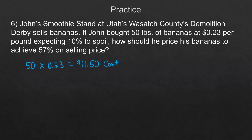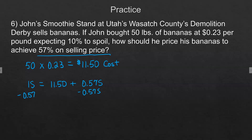We want to mark up based on selling price, but we don't know the selling price — we know the cost. So we set up the equation: $11.50 plus a 57% markup on selling price. We subtract and get 0.43 times the selling price equals $11.50. For solving equations, you're always trying to get the variable by itself, so we divide by 0.43, giving us a selling price of $26.74.